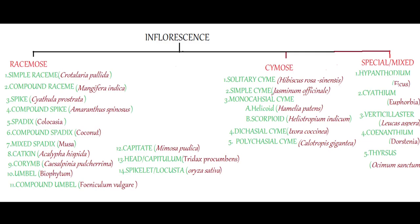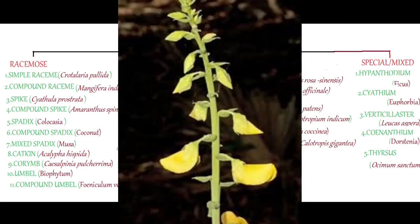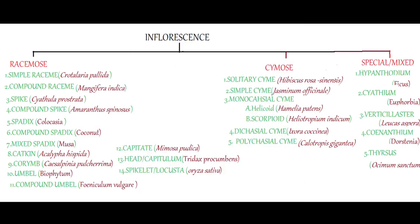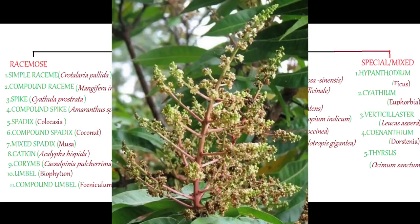There are 14 different types of racemose inflorescence. The first one is simple raceme. Here the inflorescence axis is unbranched, and stalked flowers are arranged acropetally on an unbranched inflorescence axis. Example: Crotalaria pallida. The second one is compound raceme or panicle. Here the inflorescence axis is branched, and stalked flowers are arranged acropetally on a branched axis.